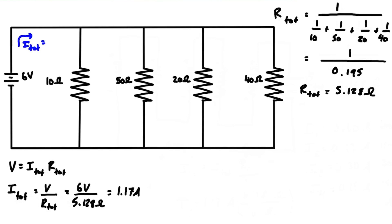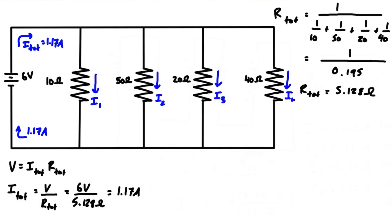I_total is equal to 1.17 amps — it's the same as the current flowing in the main branch. Now we want to find what each of the individual currents are flowing through each of the resistors: I1, I2, I3, and I4.